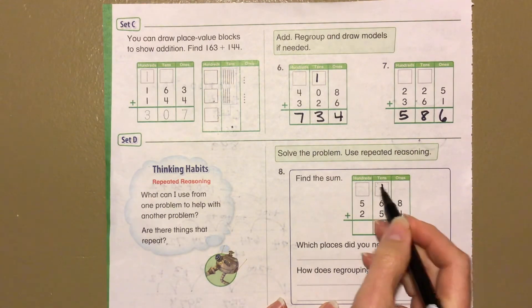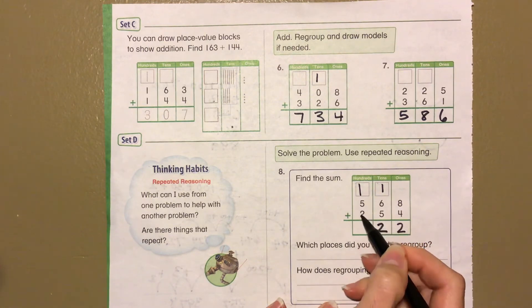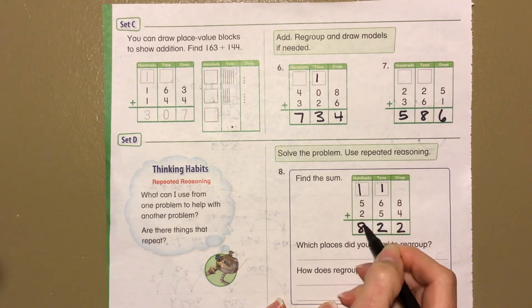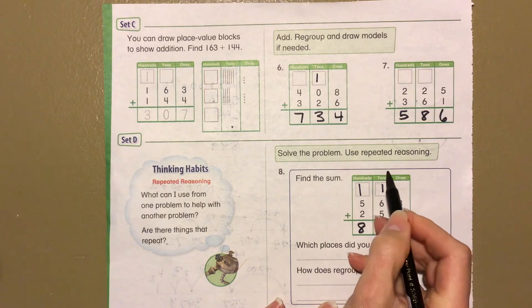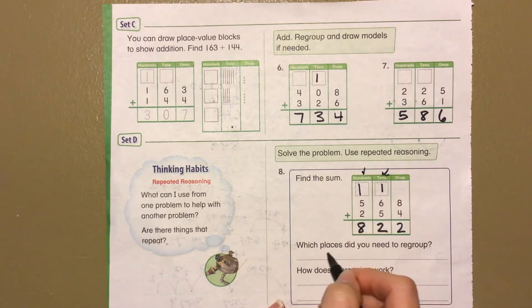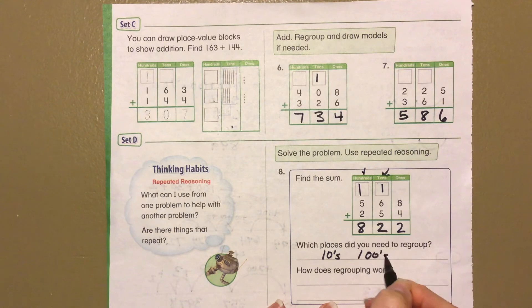6 plus 5 is 11, plus 1 more is 12. And 5 plus 2 is 7, plus 1 more is 8. What places did you need to regroup? Our tens and hundreds. So I'm going to write tens and hundreds.